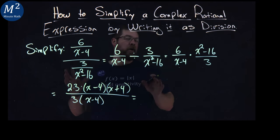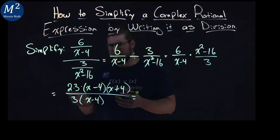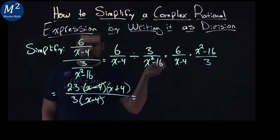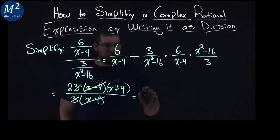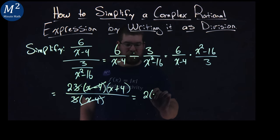Now, since we have everything already factored out, it makes it pretty simple to finish. We have x minus 4 cancels out with x minus 4, and 3 cancels out with 3, leaving me with 2 times x plus 4.